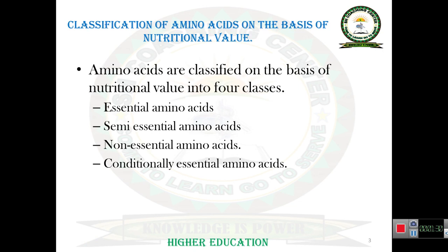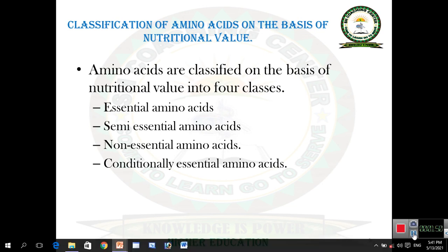Amino acids are classified on the basis of nutritional value into four classes: first, essential amino acid; second, semi-essential amino acid; third, non-essential amino acid; and fourth, conditionally essential amino acids. Here we discuss only essential and semi-essential amino acids. The remaining two classes we will discuss in the next lecture.